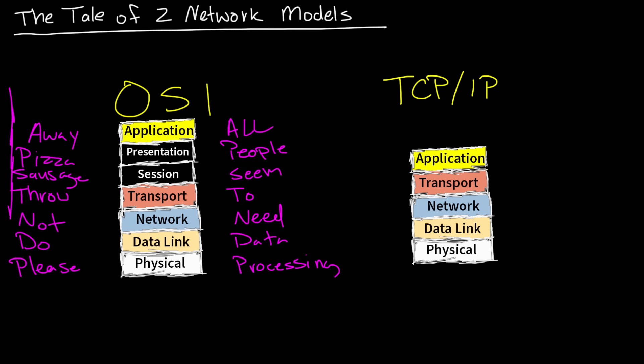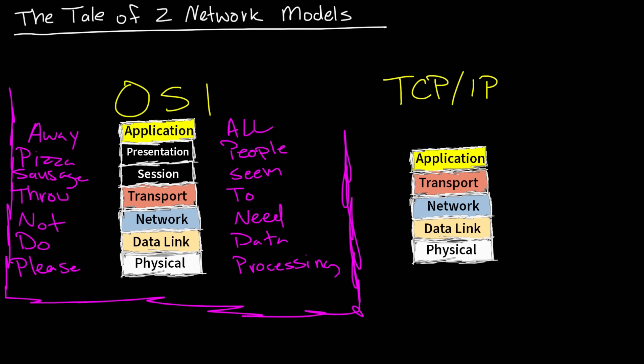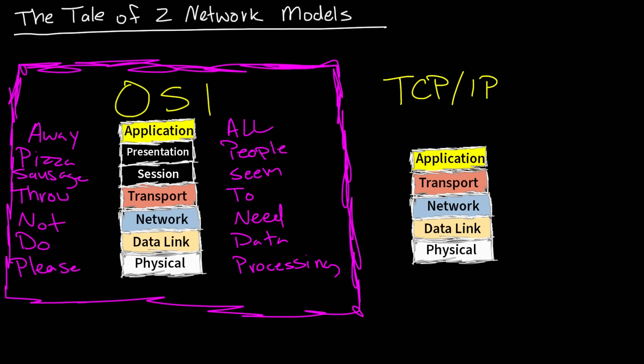A big reason to remember and memorize the OSI model is: A, you need to know it for any exam you might be studying for. And B, it's honestly the thing we reference the most when network engineers are troubleshooting or working through any kind of networking issue. 'Oh, that's a layer seven issue — application — hands off, not my problem.' Or 'Hey, that's a layer one, two, three, or four issue.'